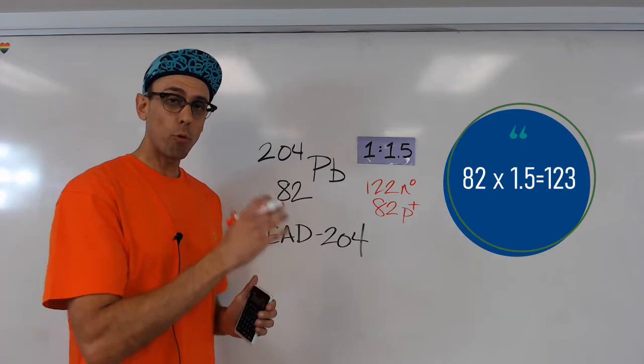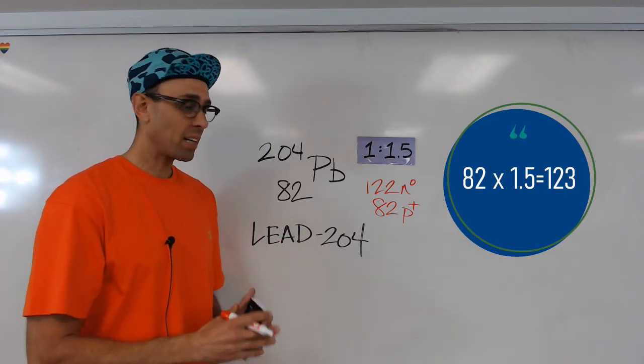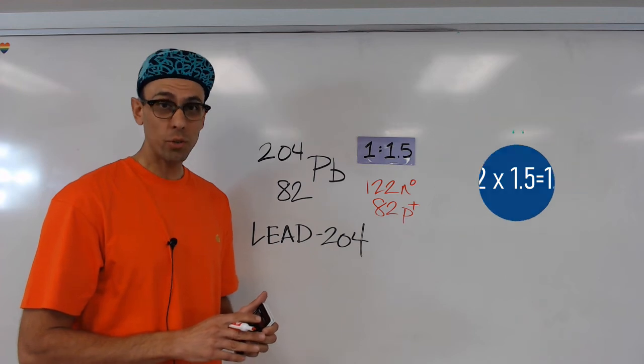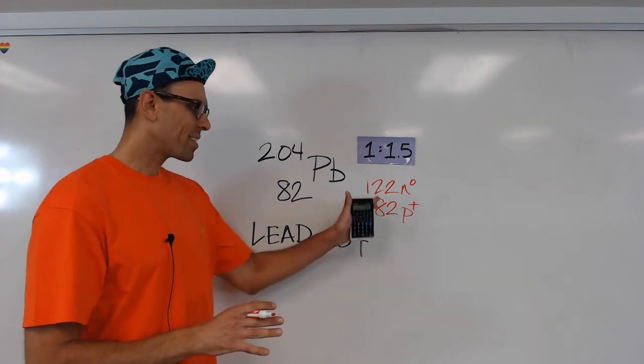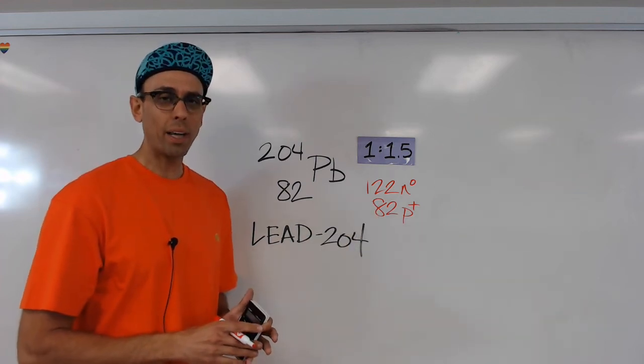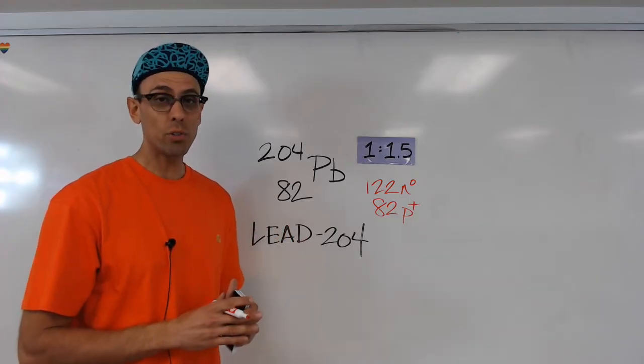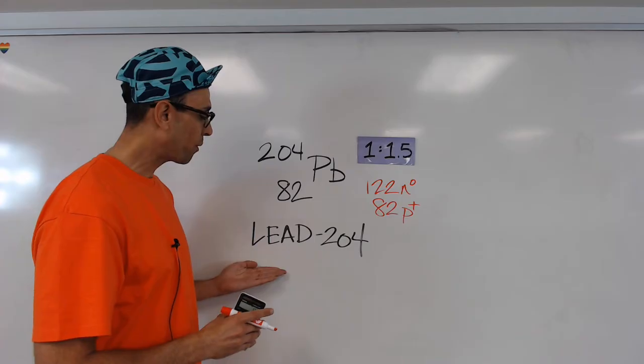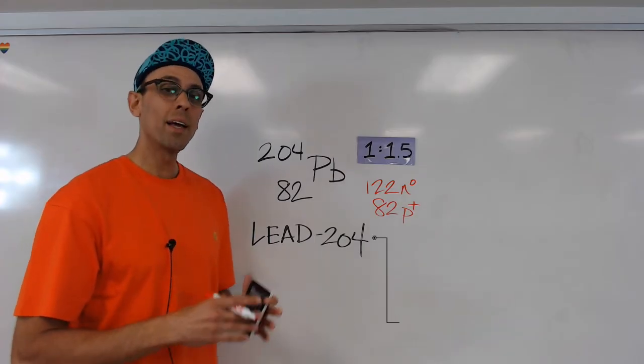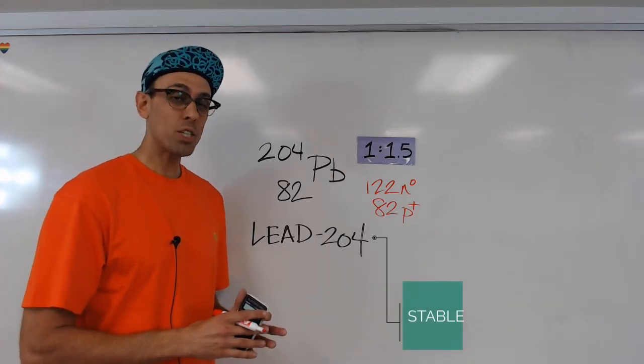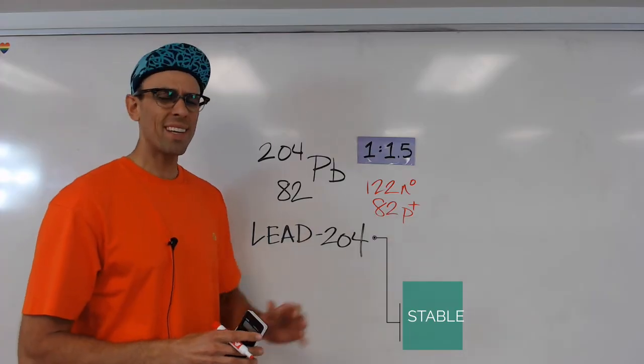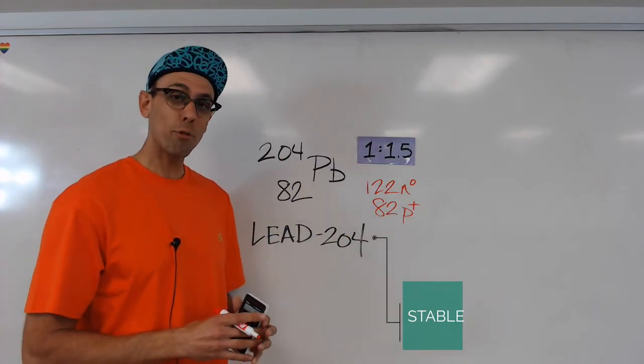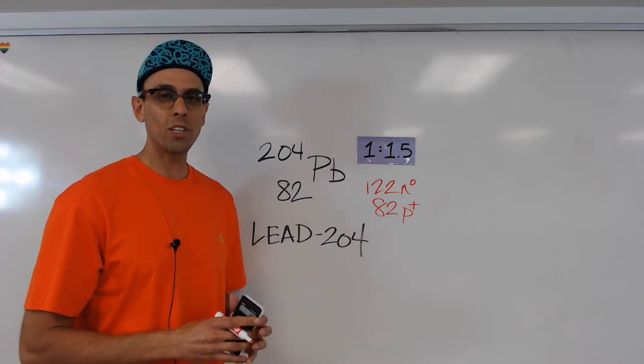So a ratio of 1 to 1.5 would mean having 82 protons and 123 neutrons. Now while this isn't exactly 123, it's very, very close. So in this case, I would judge this isotope of lead, lead-204, to be stable, because its ratio of protons to neutrons is extremely close to the desired 1 to 1.5 ratio that we saw when we looked at our graph.